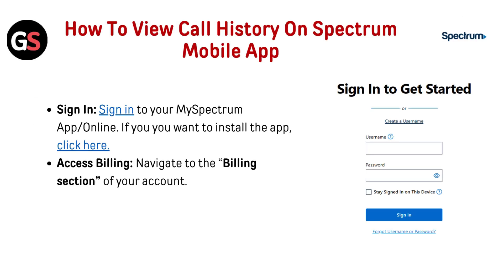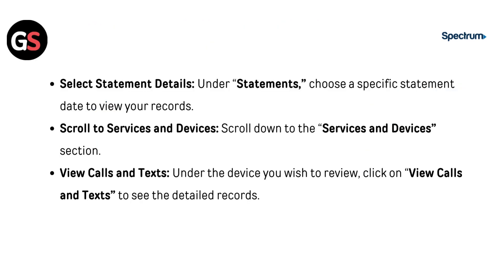Access Billing. Navigate to the Billing section of your account. Select Statement Details. Under Statements, choose a specific statement date to view your records.